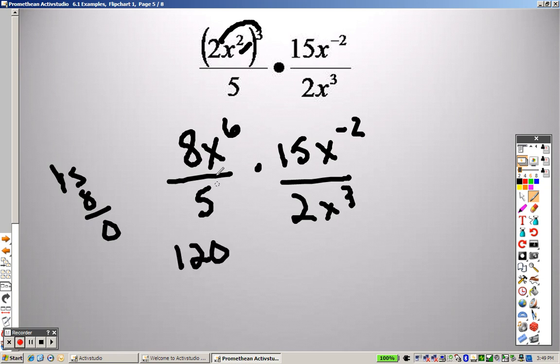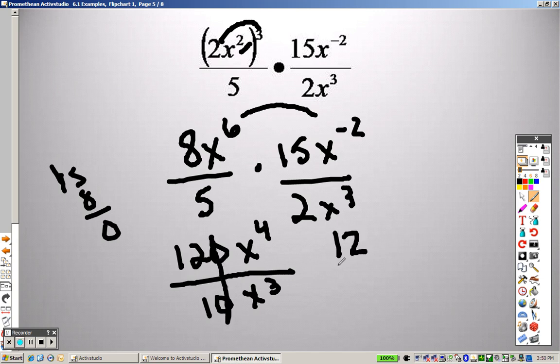So I get 120. x to the 6th and x to the negative 2, I add them to get x to the 4th on the bottom. 5 times 2 is 10. And I have an x to the 3rd. So basically I can divide a 10 out of both of those. So I really just have a 12 on top.